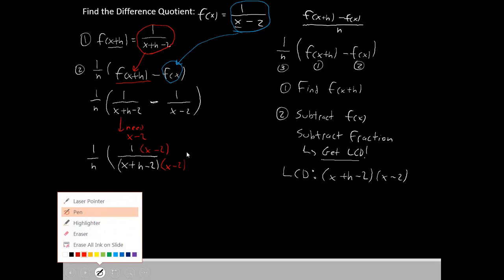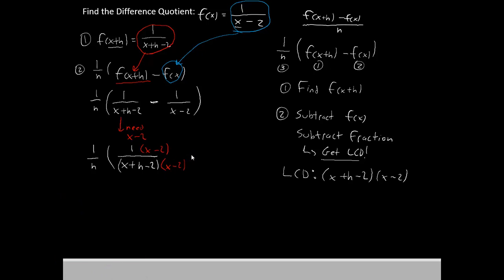Now we move on to the second fraction, which we are going to subtract. On the top we have 1 over x minus 2. The LCD already has x minus 2, but we need x plus h minus 2. We'll make a note of that there. That fraction is going to need x plus h minus 2. So we're going to multiply that on both the top and the bottom. Like that.